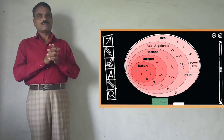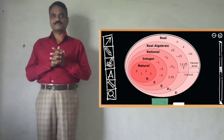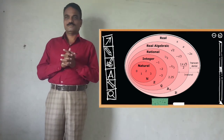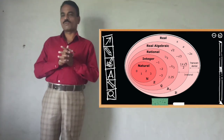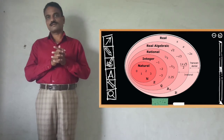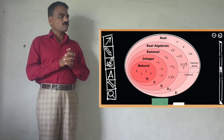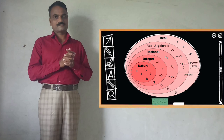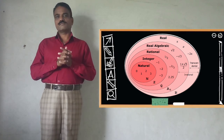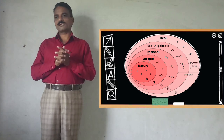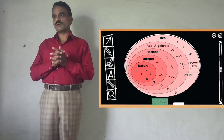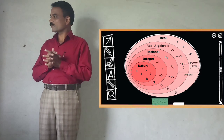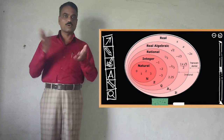The set of whole numbers: 0, 1, 2, 3, 4, 5, 6, 7 and so on. The set of integers: minus 4, minus 3, minus 2, minus 1, 0, 1, 2, 3, 4, 5 and so on.